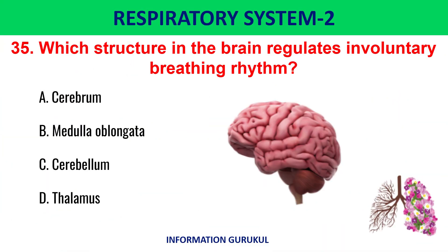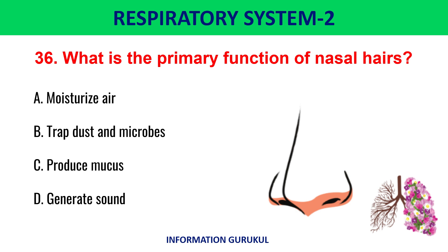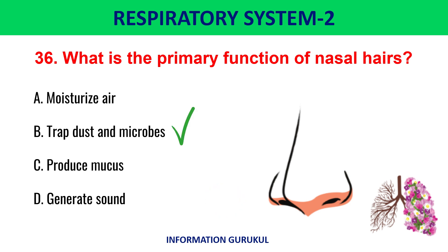Which structure in the brain regulates involuntary breathing rhythm? The medulla oblongata. What is the primary function of nasal hairs? To trap dust and microbes.